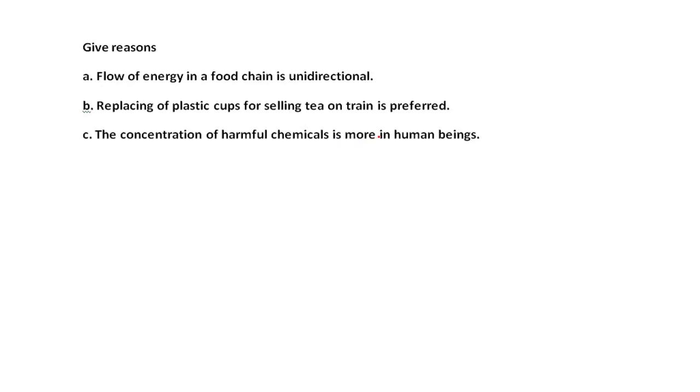Flow of energy in a food chain is unidirectional. So if we look at food chain, it starts from producers and ends at consumers. Here the energy is taken from the sun for the process of photosynthesis. The energy goes towards the higher trophic levels. The energy is transferred from one level to the other, it cannot be reused.